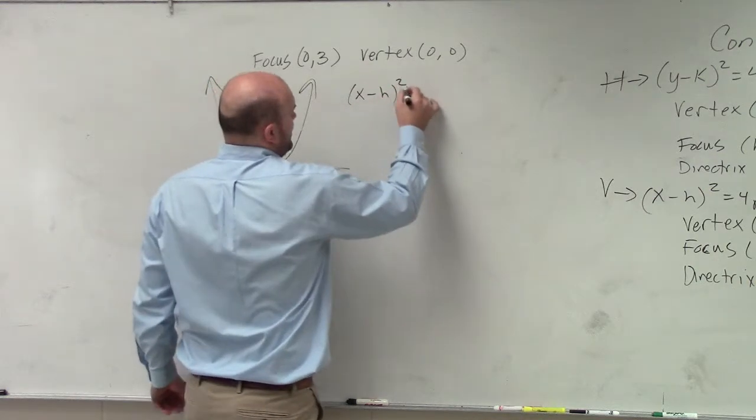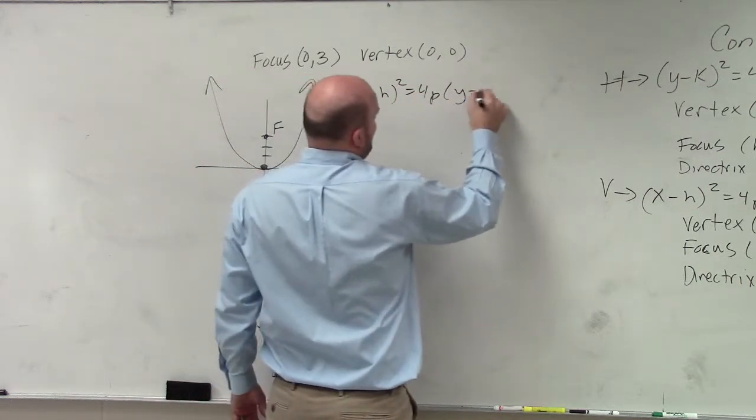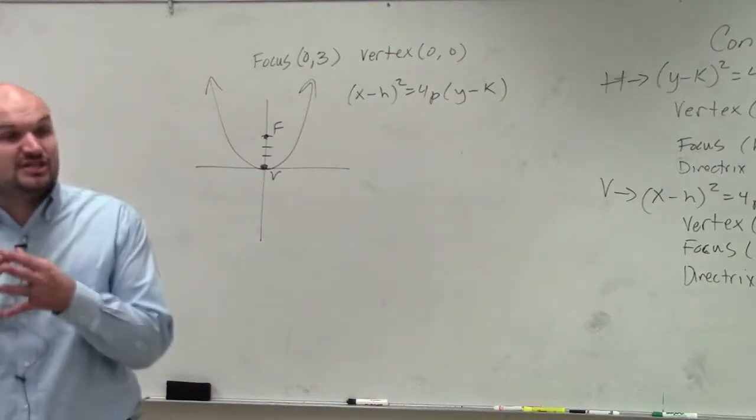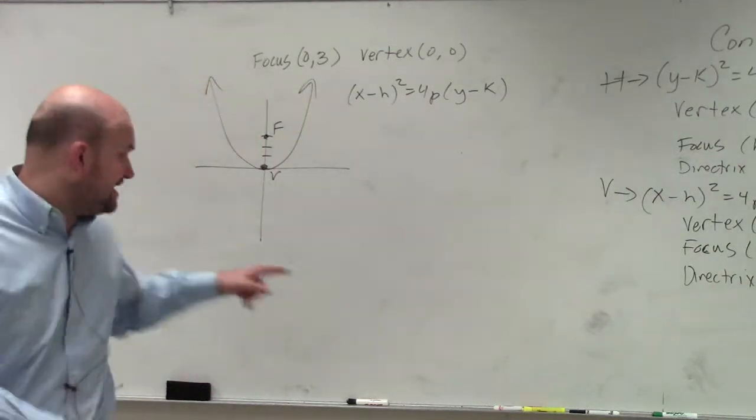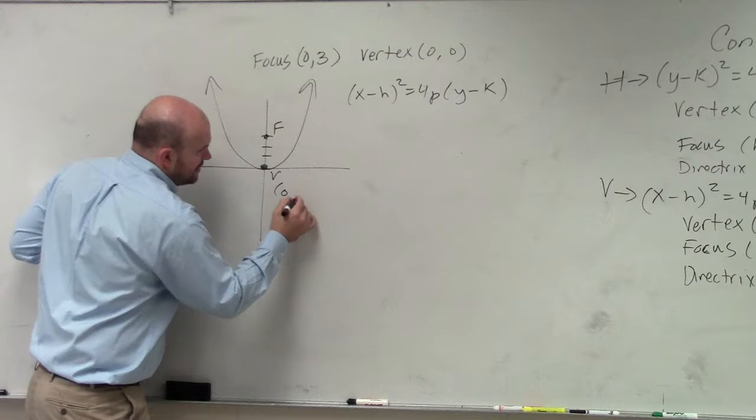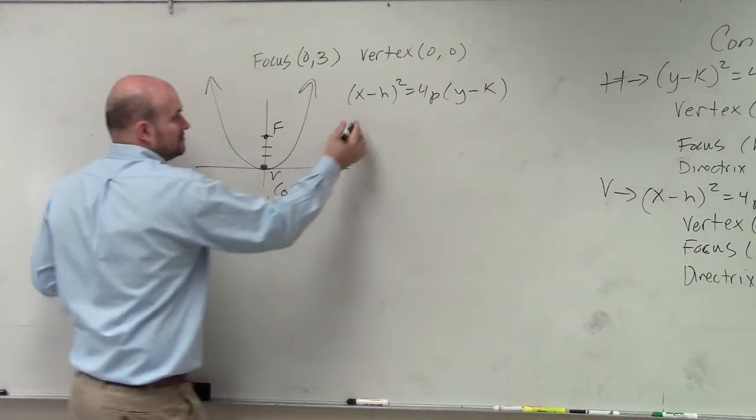x minus h squared equals 4p times y minus k. So remember, h and k is your vertex. My vertex is at 0, 0. So that's easy.